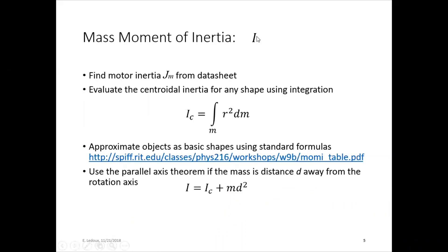I is mass moment of inertia. So that is units of kilograms times meters squared. It includes two things, the motor inertia and the load inertia. So the motor inertia is JM. You can get that from the data sheet. It'll actually say JM equals and then give you a number. Then to find the load inertia, you can evaluate it for any shape using integration.